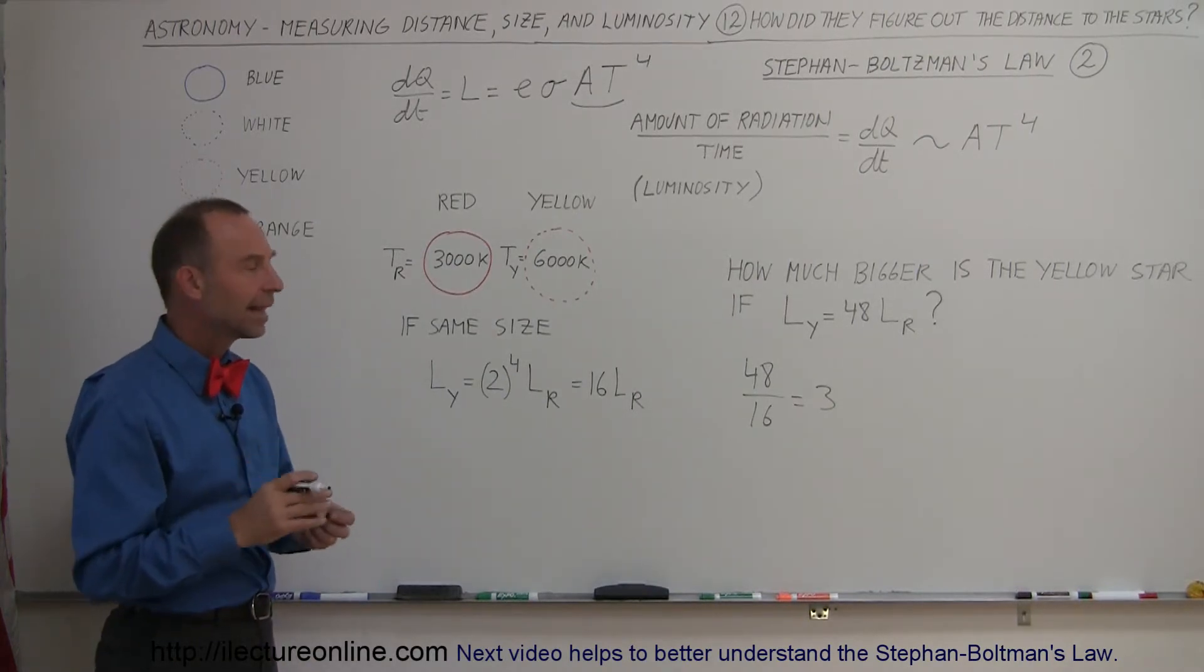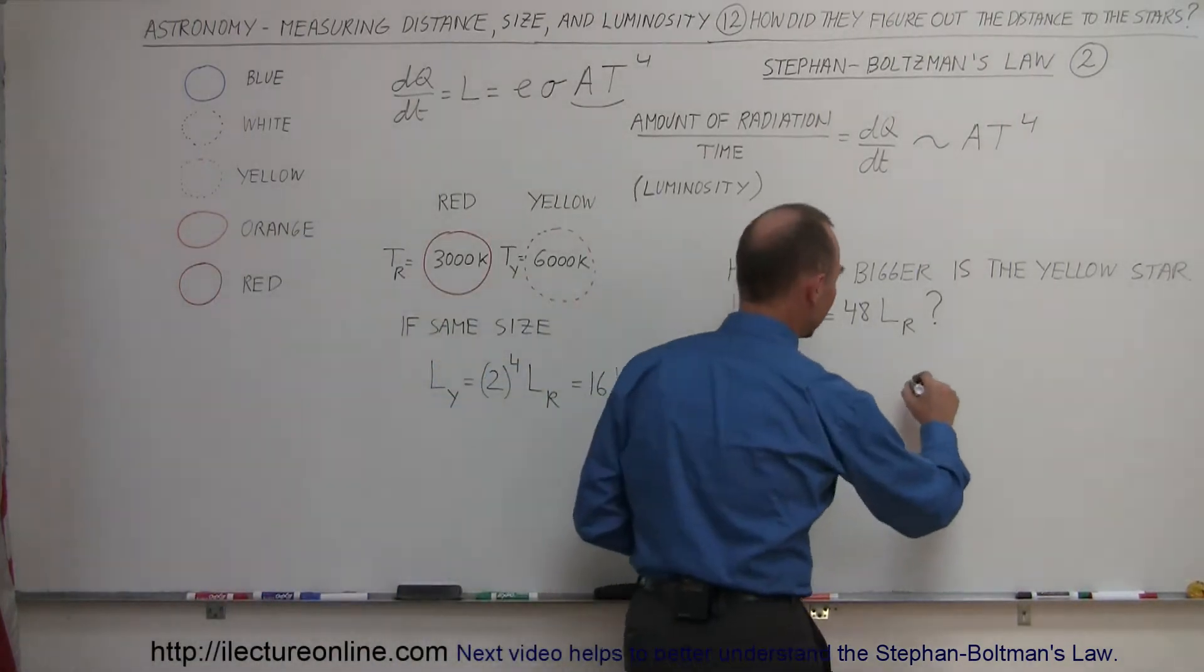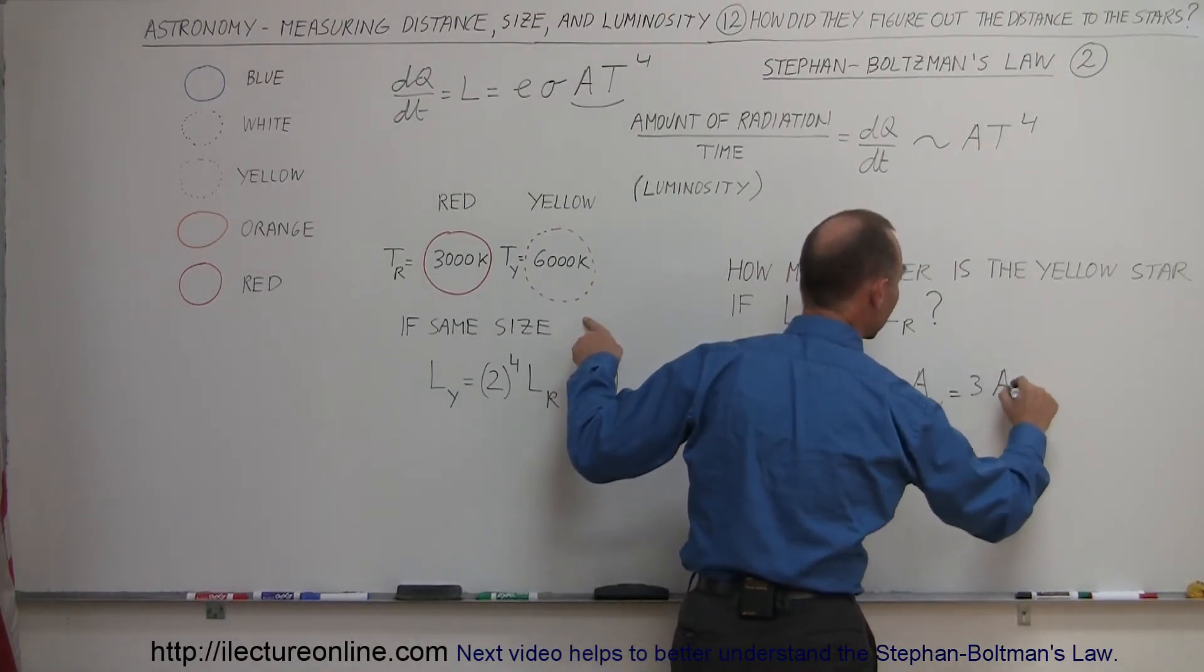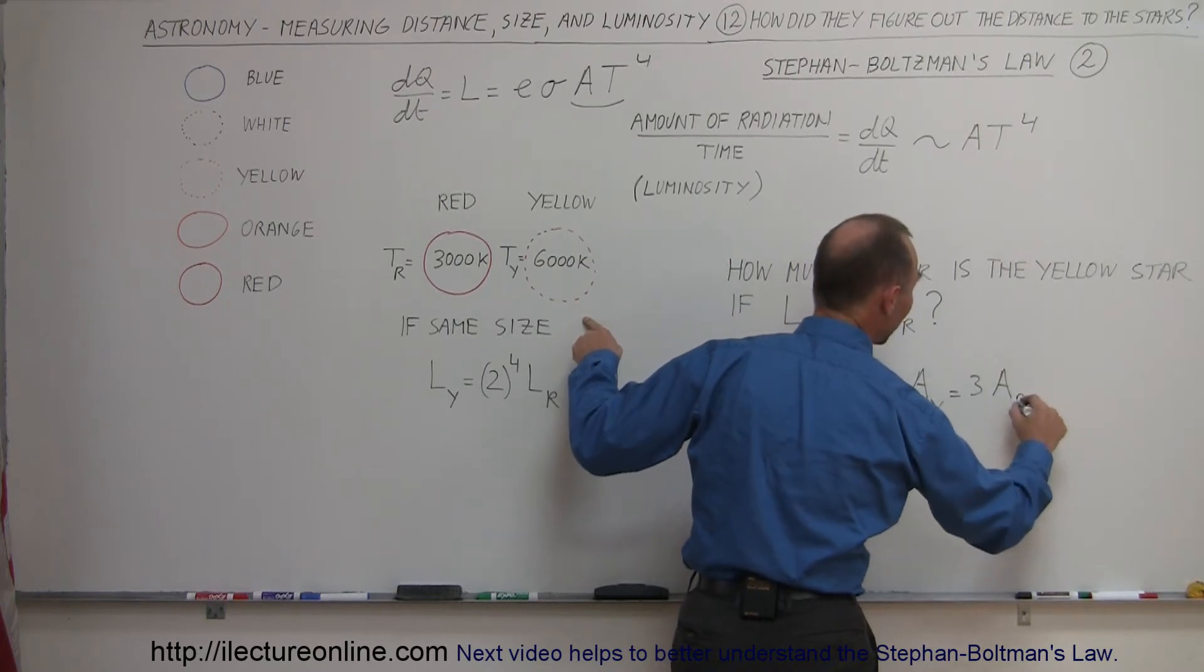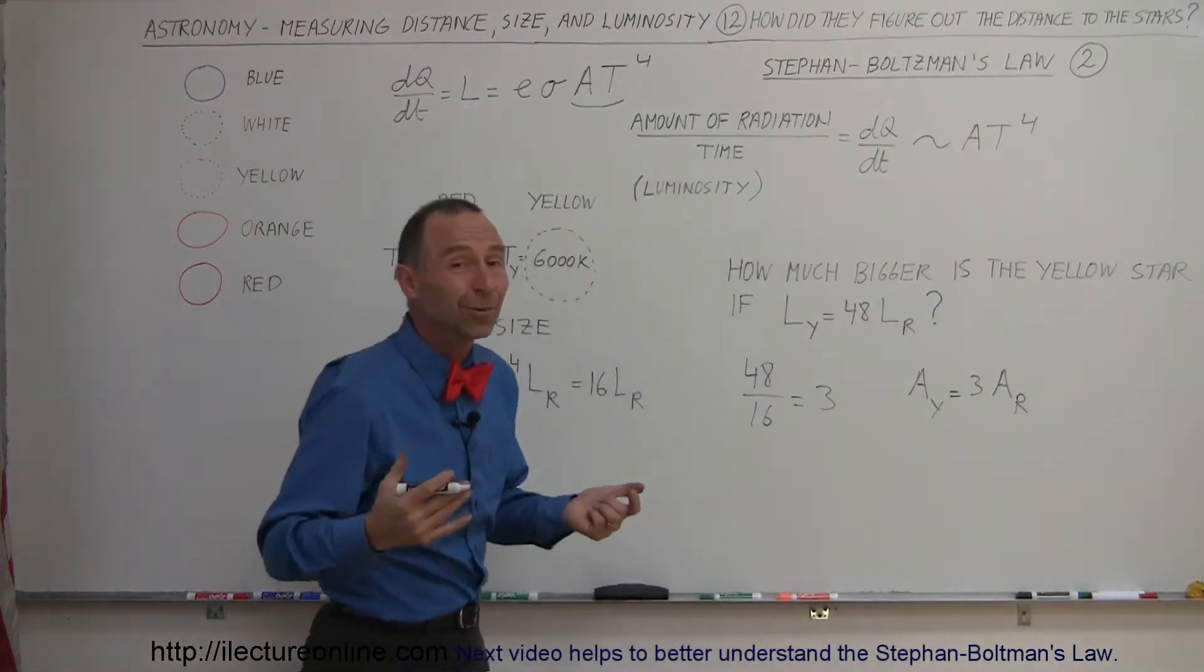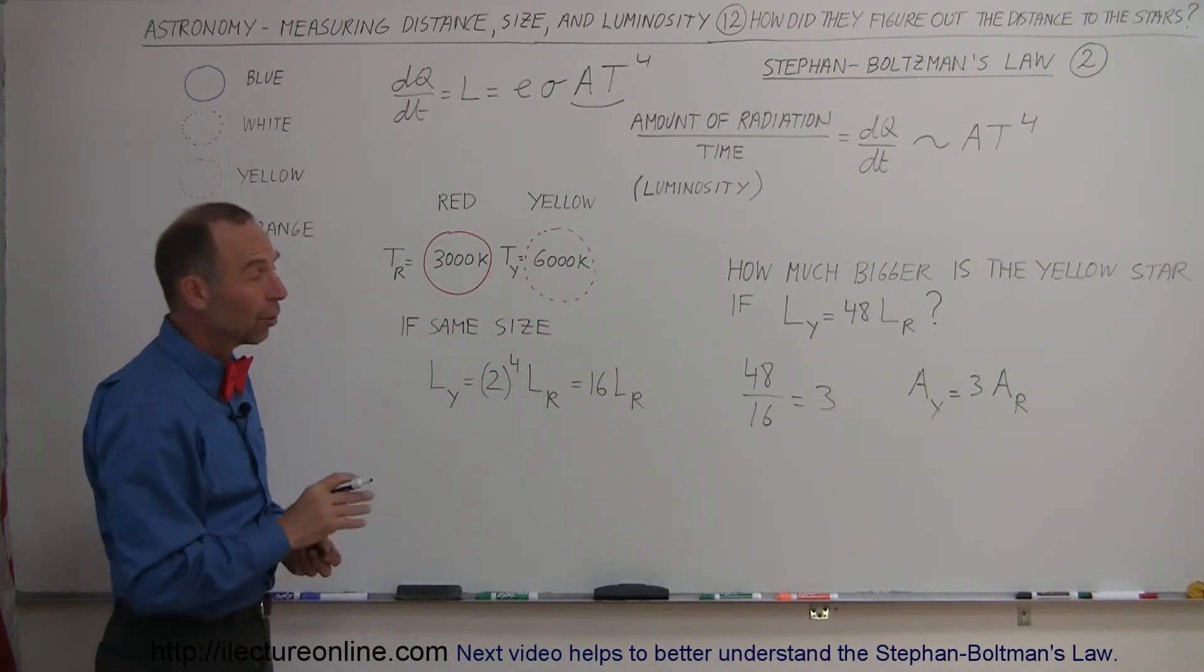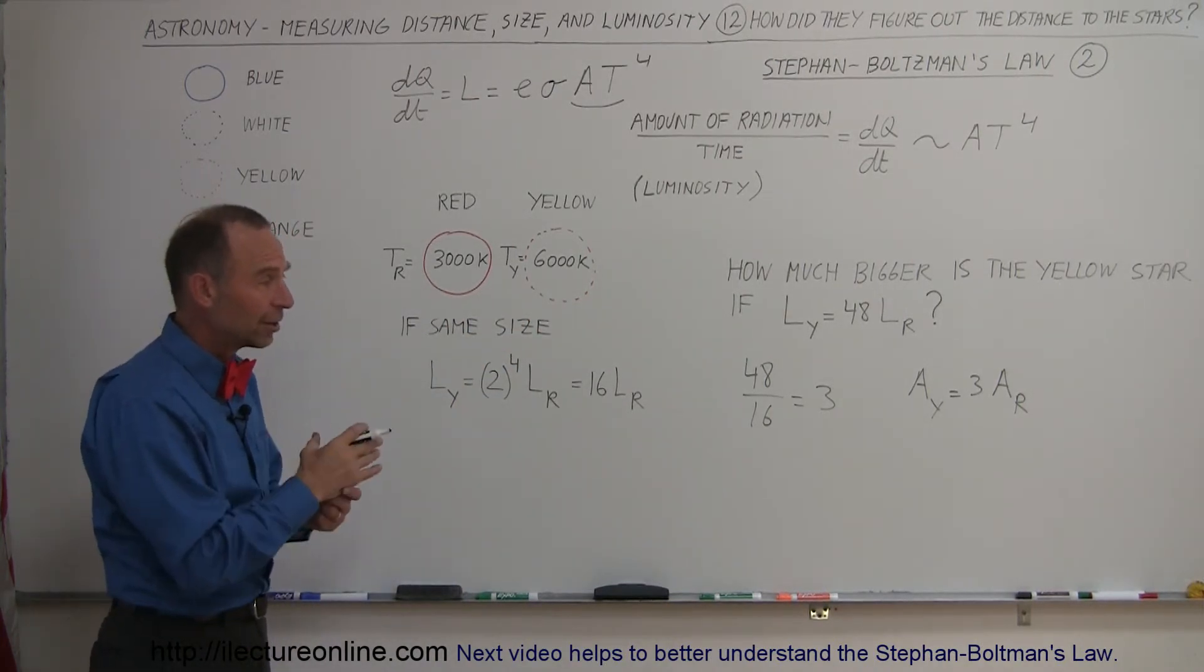So now we can say that because of that, the area of the yellow star is equal to three times the area, the surface area, of the red star, since it's three times as bright than I would expect it to be if they were the same size.